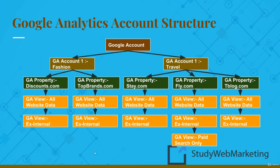Going further, you can see under fly.com there is a filter called 'paid search only'. This is an example of an include filter — the first filter we experienced for excluding internal traffic was an exclude filter. Now let's consider that fly.com has outsourced their paid search campaign to an external advertising agency. This agency wants to have access to website data so they can track conversions driven from paid search campaigns and optimize campaigns accordingly.